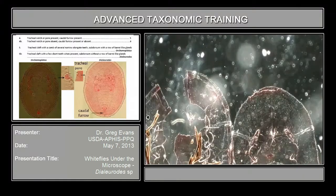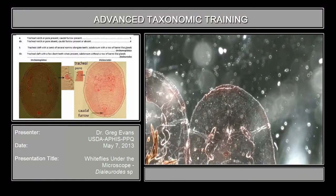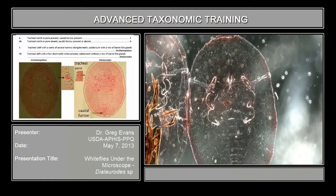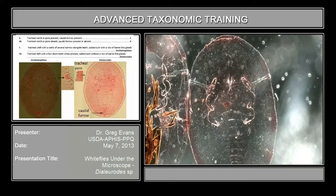If we move to the Dialerodes slide, this may be easier to see in this view. You can see the caudal and the tracheal furrow along here very well.